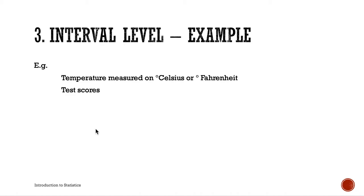A score of zero on a test just means the student found it difficult — it doesn't mean their brain is empty or that they have zero knowledge of the topic. That's why in grading, a score of zero doesn't translate to a grade of 0% — it might correspond to 65, because the complete absence of knowledge is not implied.